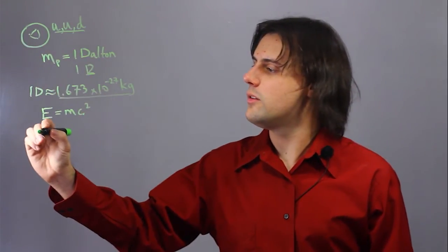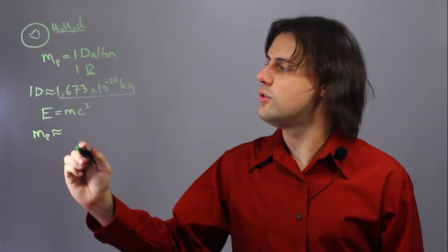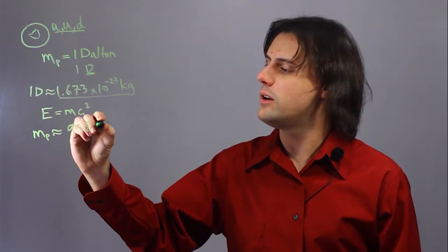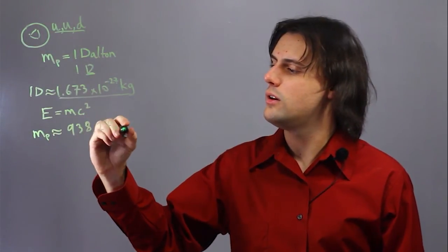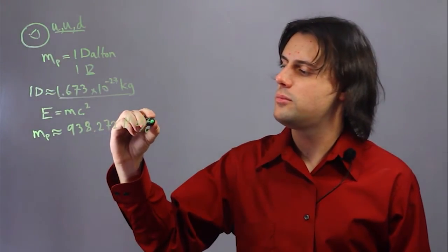The mass in units of energy of the proton is equivalent to approximately 938.272 mega electron volts per speed of light squared.